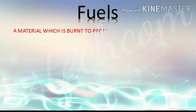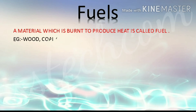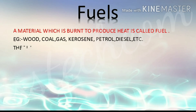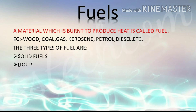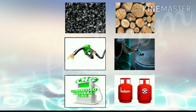Fuels: A material which is burned to produce heat is called fuel. Examples include wood, coal, gas, kerosene, petrol, diesel, etc. The three types of fuel are solid fuel, liquid fuel, and gaseous fuel. These are some examples of the three types of fuel.